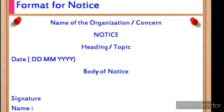In the notice format, we use the center and the left side corner. At the center, you have to write the name of the organization or concern — maybe an institution, a school, or a particular company name. Then you have to write the heading or topic: what is the program about? For example, if it is an annual day, write 'Annual Day Program.' On the left side, write the date, month, and year clearly.